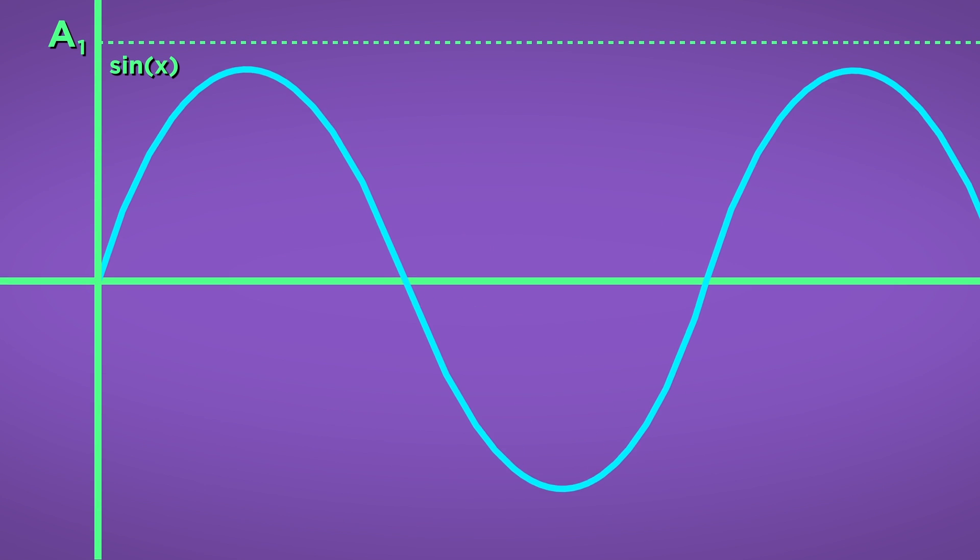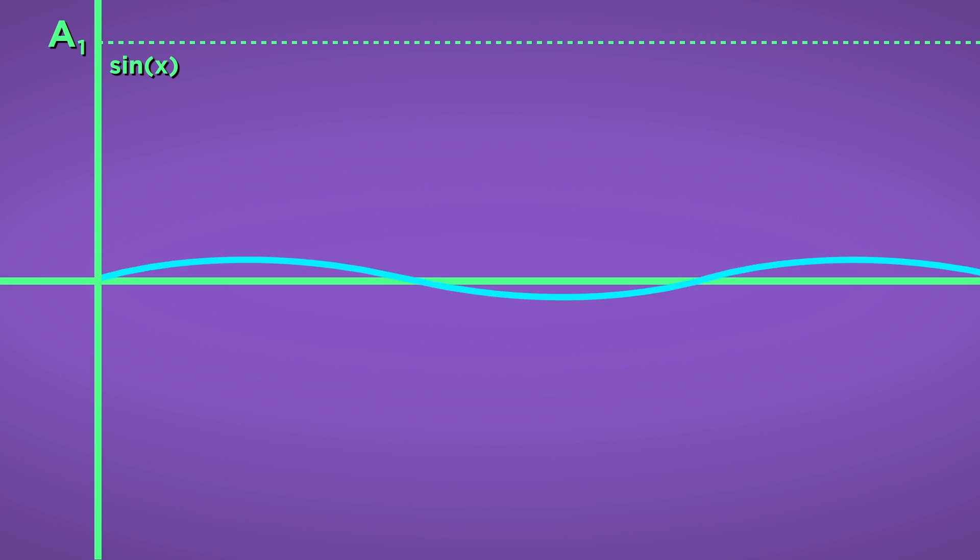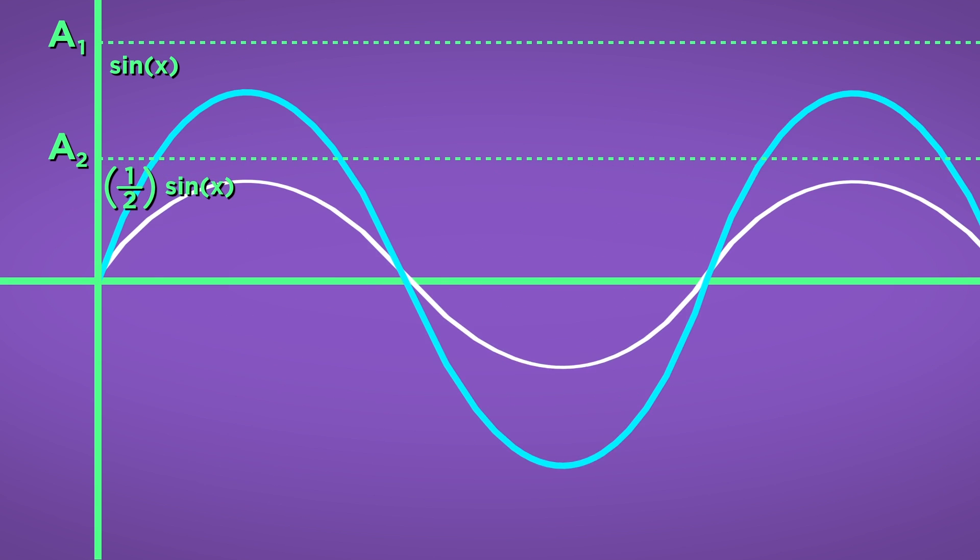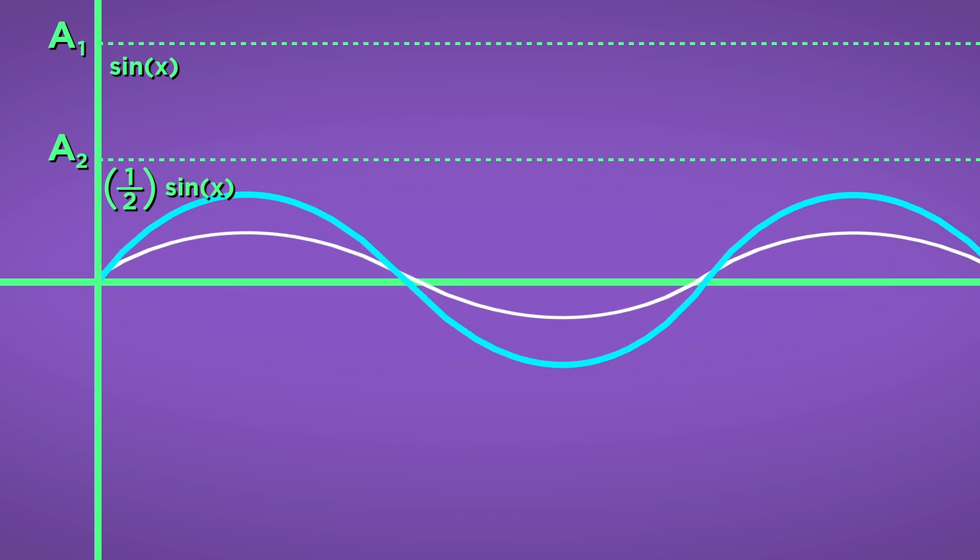To understand how these pure tones connect to what you hear when you pluck a string, let's dive further into the mathematics. To reduce the amplitude of a sine wave, which makes it quieter, you can multiply it by a number smaller than 1, which changes it like this. The smaller the number, the further it reduces the amplitude. We can also add sine waves together.